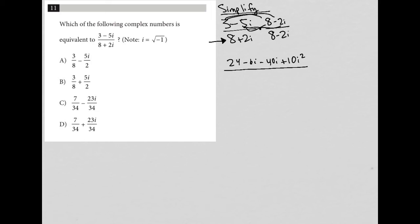In my denominator, I do the exact same thing. I get 8 times 8, which is 64, 8 times negative 2i, which is minus 16i, 2i times 8, which is plus 16i, and 2i times negative 2i, which is minus 4i squared. So I want to simplify this further.